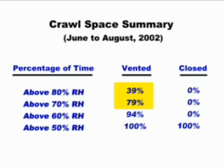From June to August 2002, the wall-vented crawlspaces stayed above 70% relative humidity 79% of the time, and they stayed above 80% relative humidity 39% of the time. While the closed crawlspaces never got above 60% relative humidity.